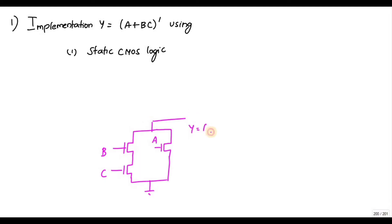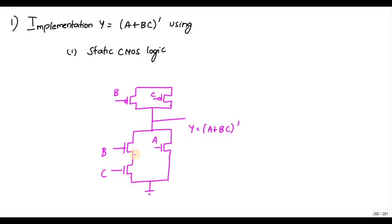So we'll get the answer as Y = (A + BC)̄. In the PMOS network, BC is in series — so for PMOS you connect BC in parallel, and BC is in parallel with A, so you connect A in series. This completes the static CMOS implementation.